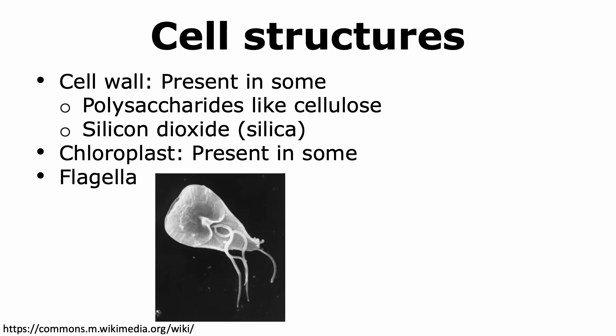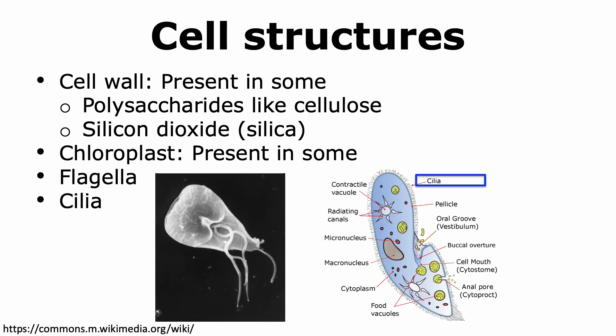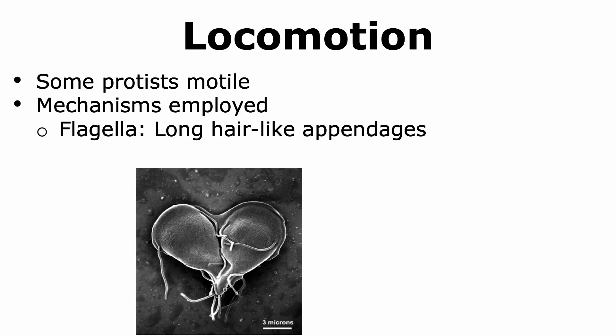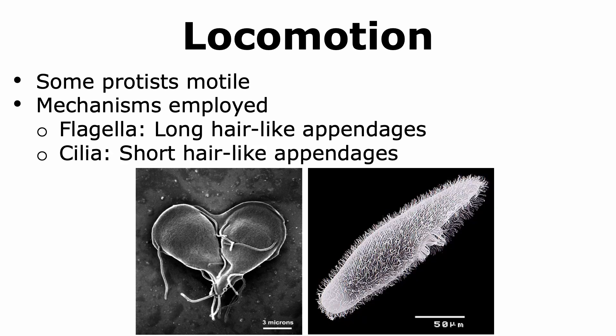In some protists, we can see appendages like flagella and cilia. Flagella are long, hair-like appendages that help protists move. In addition to flagella, some protists can also have cilia, which are much shorter hair-like appendages that also aid in movement or motility.